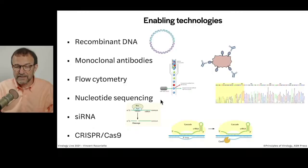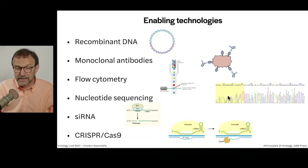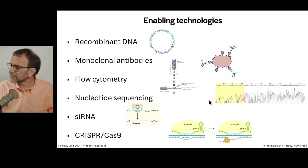Nucleotide sequencing was developed in the 70s and then more recently became high-throughput deep sequencing. Here's a trace of a nucleic acid sequence where each base can be distinguished as a peak — A, G, C, T. When I sequenced the genome of poliovirus in the 1980s, it took me a year to do that. Nowadays, you could do it in less than an hour because of the technology.